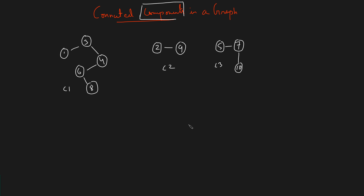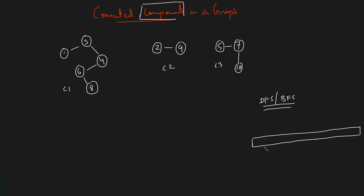Going forward we're going to learn about traversal techniques — in the next video you'll learn about DFS and BFS. Whatever code you write, you have to write it for multiple components. To do this, we are going to take a visited array. Over here you can see there are 10 nodes, so you're going to take a visited array of size 10.